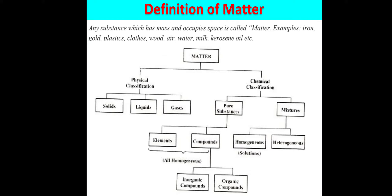Physical classification can further classify matter into three categories: solids, liquids, and gases. Chemical classification is divided into two parts: pure substances and mixtures.